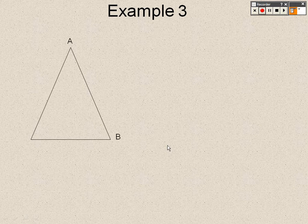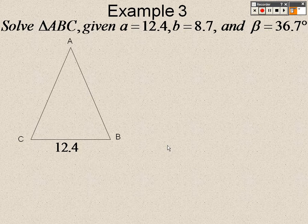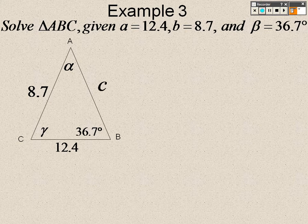So example 3. We have ABC. I'm giving A is 12.4. I'm giving that B. So there's B is 8.7. And I'm giving beta is 36.7. So when we go to fill this in, here's all the missing parts I need to solve for.